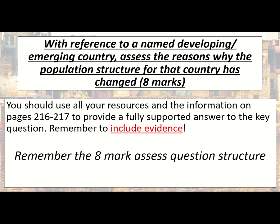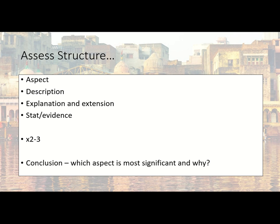If you've forgotten how to structure eight-mark questions, there's a video in the revision folder called 'Eight Markers Made Easy' and also a 'How to Write a Conclusion' video to help you. As a quick snapshot: reasons will be things like improvements to education and improvements to healthcare. In each paragraph, don't waffle — go straight in and give one reason why India's population structure has changed, and also name how it has changed. For example: 'India has a lower proportion of young dependents' — that's an obvious change that has happened — then explain why.